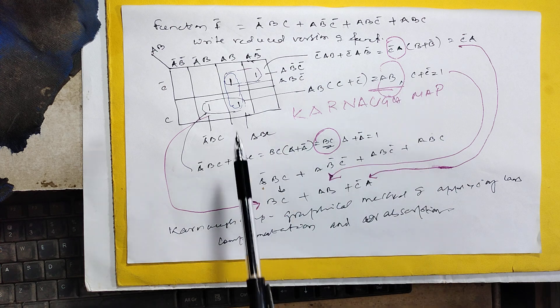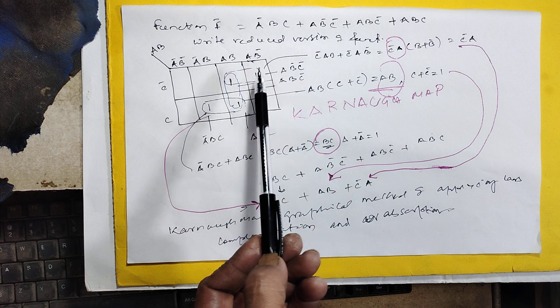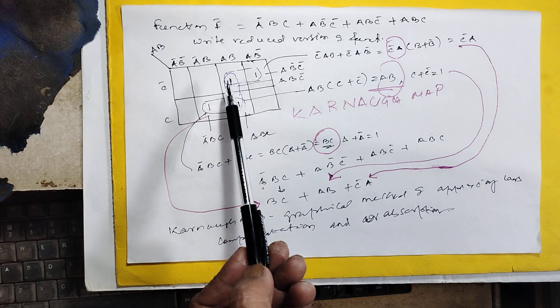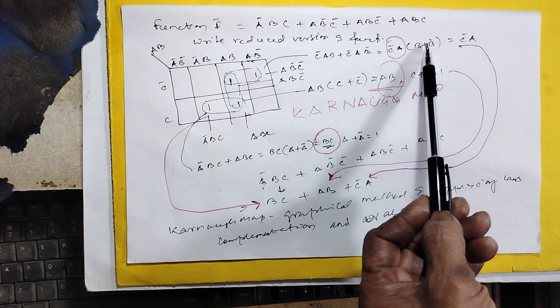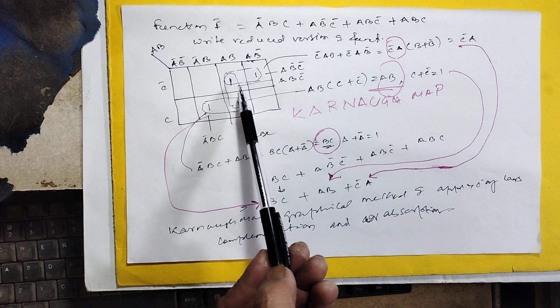ab, ab'. c' here, c' is common, a is common. ac' is a plus into b plus b', b plus b' equals 1, so c'a. So this is c'a, this is ab.